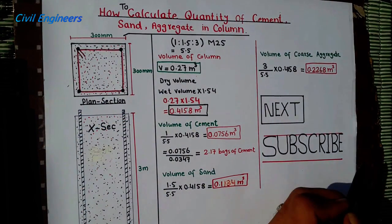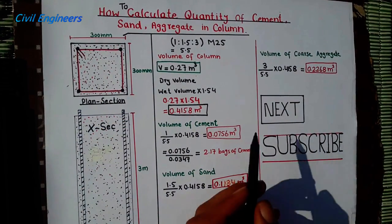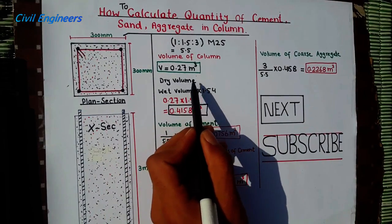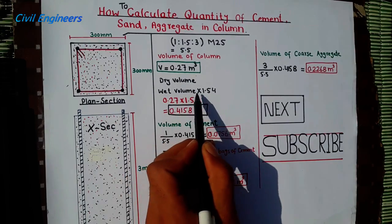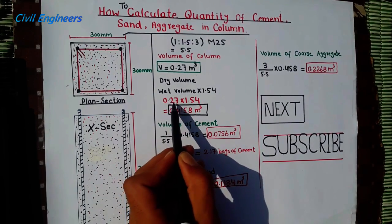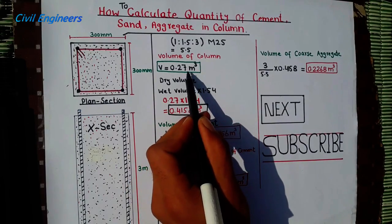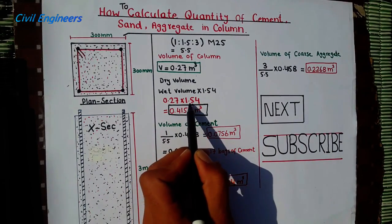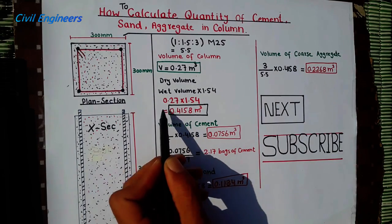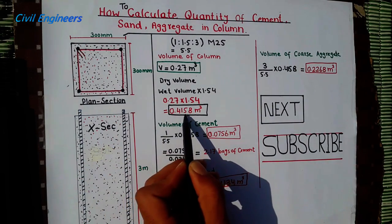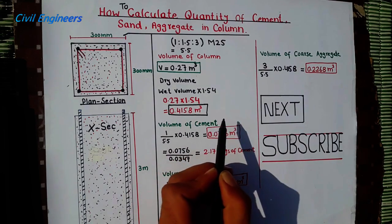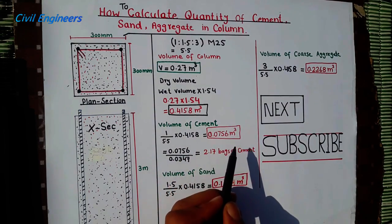Now I want to convert the wet volume to the dry volume. So we multiply 0.27 by 1.54, which gives you the dry volume for this column: 0.4158 meter cube.